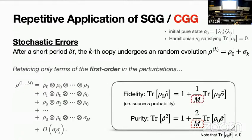For stochastic errors, assume the noisy state is a linear combination of the pure state and a trace-free Hamiltonian sigma_k. Taking the first-order approximation in sigma, the fidelity and purity are improved by a factor of 1/m.